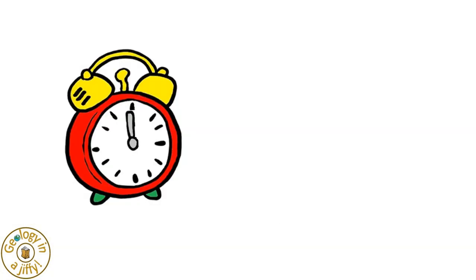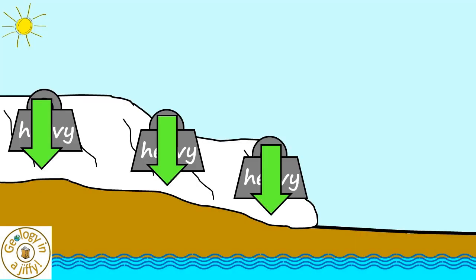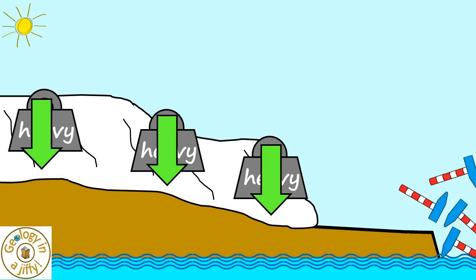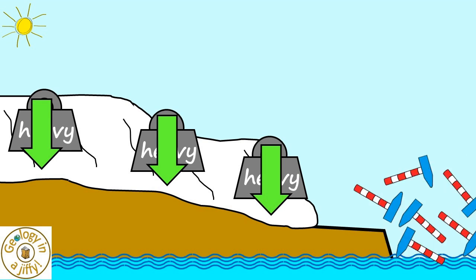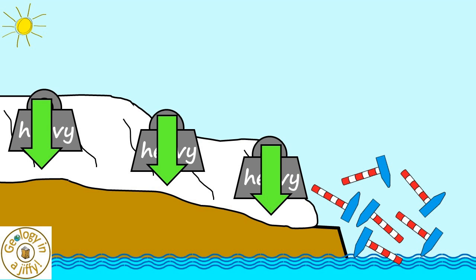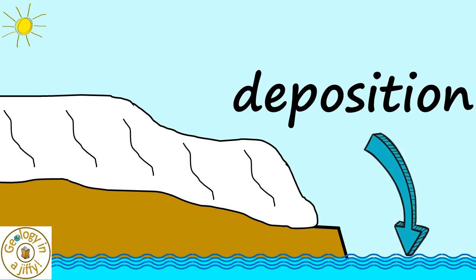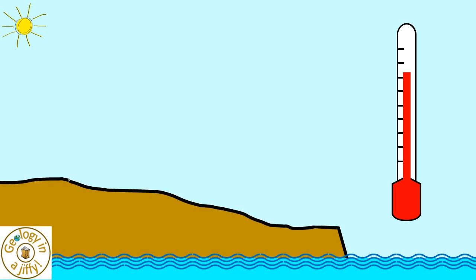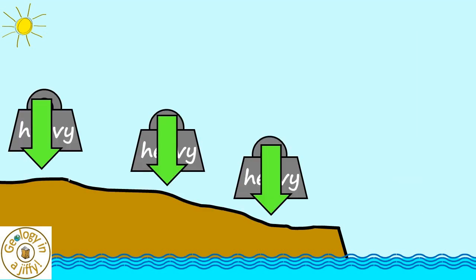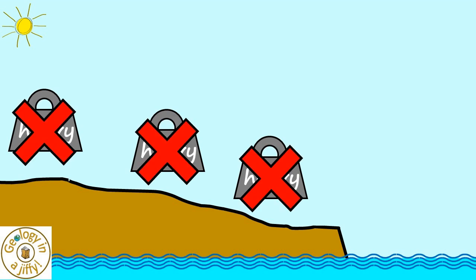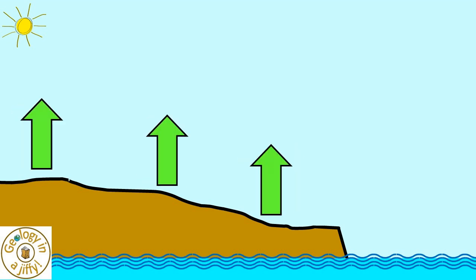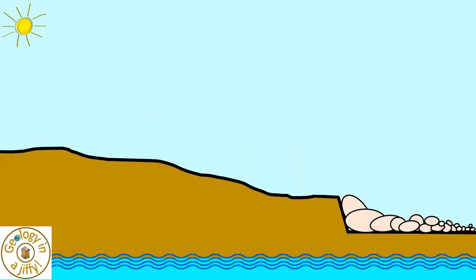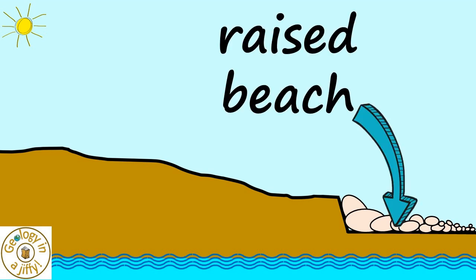Over time the sea erodes the land where land meets the sea — the waves and their carried sediment eroding the coast landward, with sediment then deposited on the coastal area. With warming, the glaciers melt and disappear, meaning the great weight that pushed the continents downwards is now gone, so the land rebounds upwards, exposing the deposited sediment which is now our raised beach.